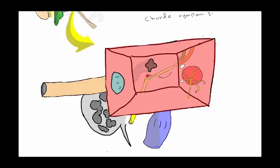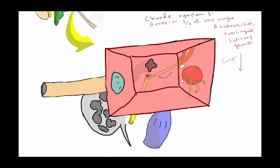The chorda tympani is a branch from the facial nerve. It supplies the anterior two-thirds of the tongue for taste, and it also supplies the submaxillary and sublingual salivary glands. As a complication of surgery, if we accidentally cut the chorda tympani nerve, there will be a lack of taste and dry mouth.